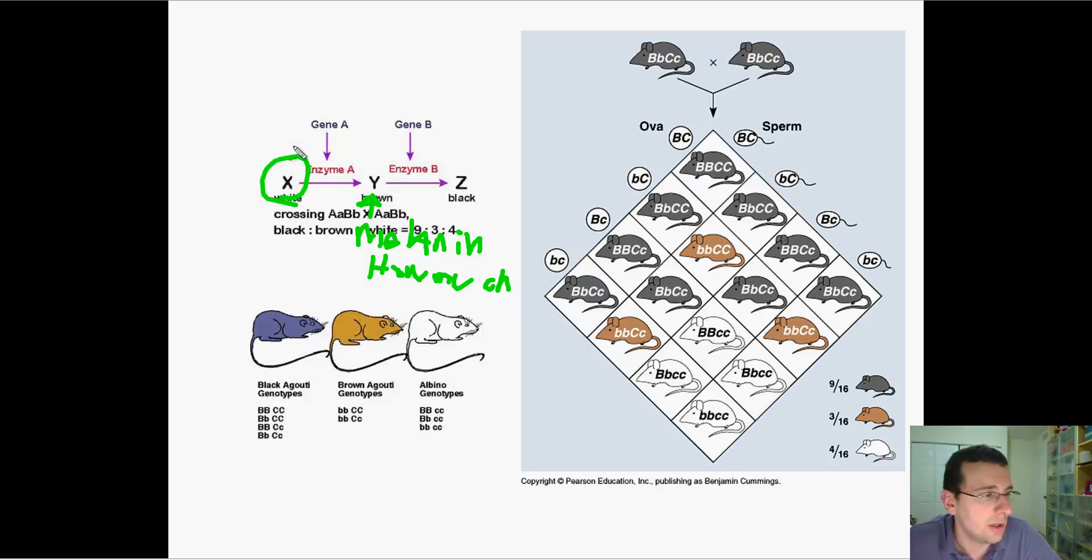Meanwhile, this gene here teaches you how to make melanin. So both genes are involved with melanin, but this one teaches you how to make it, and this one teaches you how much of it to make.